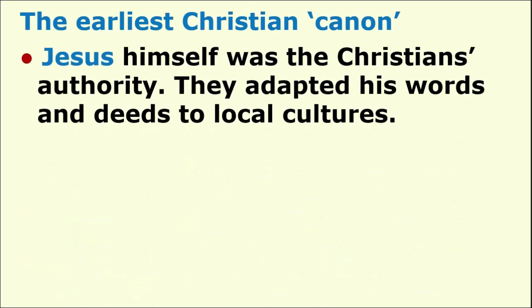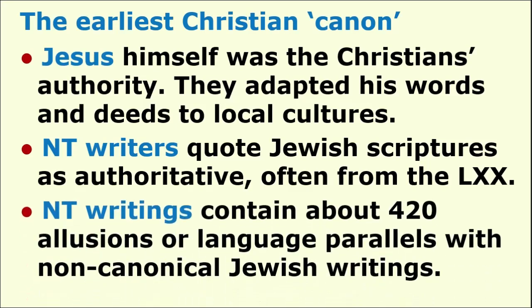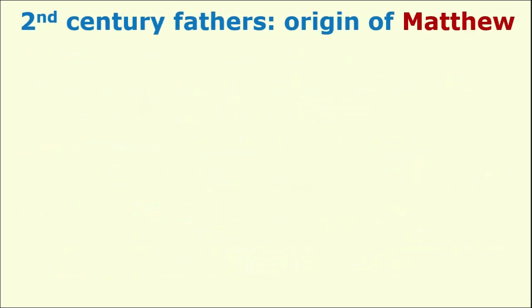What then was the earliest Christian canon? Jesus himself was the Christian's authority. They then adapted his words and deeds to their local cultures. New Testament writers mostly quote Jewish scriptures as authoritative, often citing the Septuagint. Nevertheless, New Testament writings contain about 420 allusions or language parallels with non-canonical Jewish writings. By the second century, however, the early church leaders — whom we call fathers — spoke about the origin of Matthew's gospel.